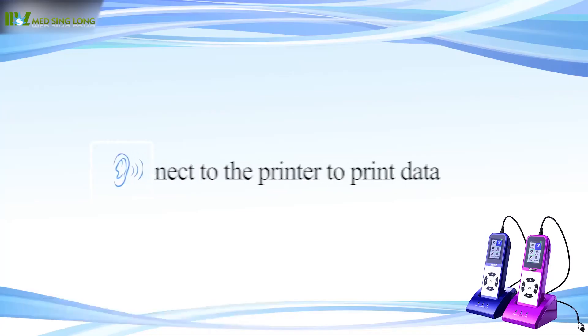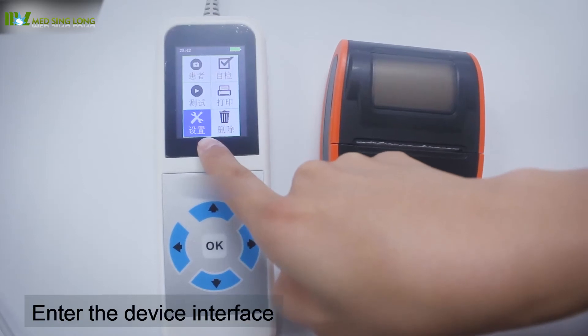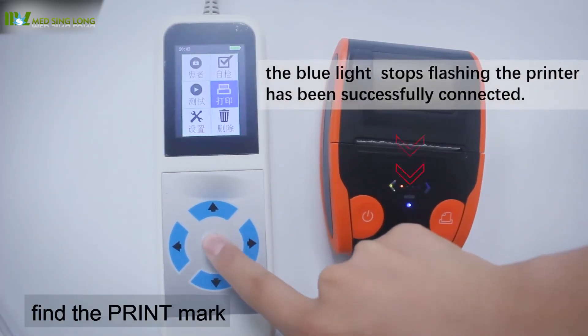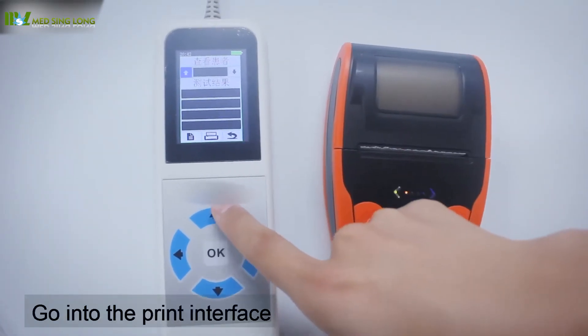Connect to the printer. Long press the power button of the thermal printer. The blue light will flicker. Enter the device interface of the main machine, find the print mark, and click OK to go into the print interface.